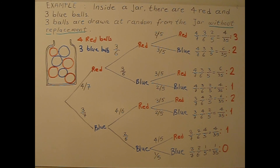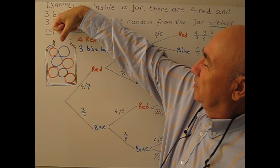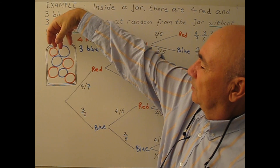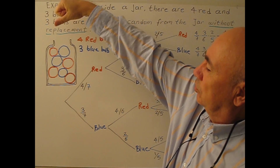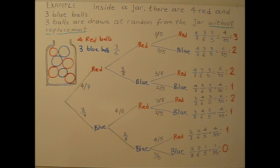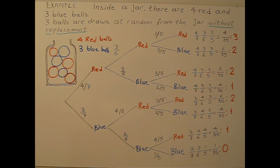So the question is: what is the probability of getting zero red balls, one red ball, two red balls, or three red balls? I close my eyes and mix the balls — all the same size. I randomly draw one ball, keep it, draw a second ball, keep both, and draw a third ball. Drawing without replacement is important because this involves dependent events. The probability of drawing the second ball depends on the outcome of the first, and the probability of the third depends on the first and second. I can calculate the probabilities by constructing a tree diagram.